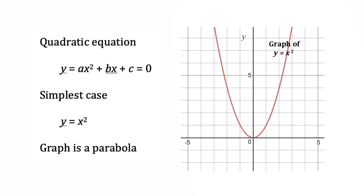When plotted out as a graph, a quadratic equation produces a curve known as a parabola, with the turning point at the bottom if a is positive, and at the top if a is negative.